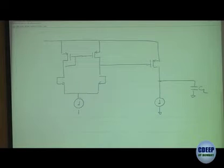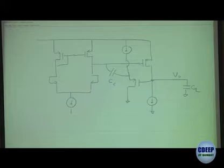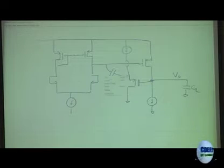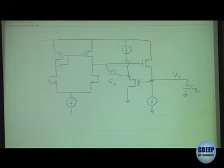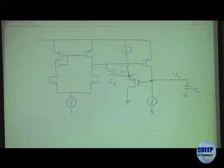What we can do is take the Vout node and buffer it using a source follower, then connect CC from there. This source follower takes V0 and buffers it. Functionally everything is still the same — all our equations are valid — but now I have removed the feed-forward path, because this current cannot go forward since this node is being driven by the output node.